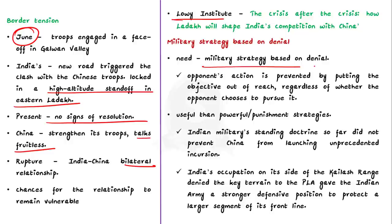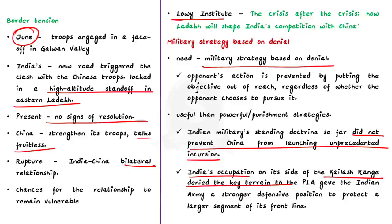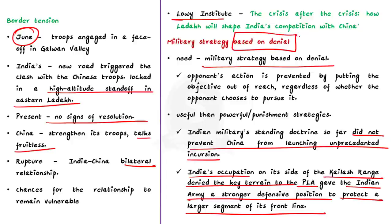The Lowy Institute published a study on the role played by Ladakh in shaping India-China relations, presenting three key lessons based on the critical assessment of the Ladakh crisis. The first is the need for a military strategy based on denial. In a denial strategy, an opponent's action is prevented by putting the opponent's objective out of reach. According to the editorial, denial military strategies are more useful than punishment strategies. India so far adopted strategies based on punishment — deterring adversaries with the threat of massive punitive retaliation — but this did not prevent China from launching unprecedented attacks. In contrast, India's occupation of the Kailash Range denied key terrain to the Chinese army, giving the Indian army a stronger defensive position.